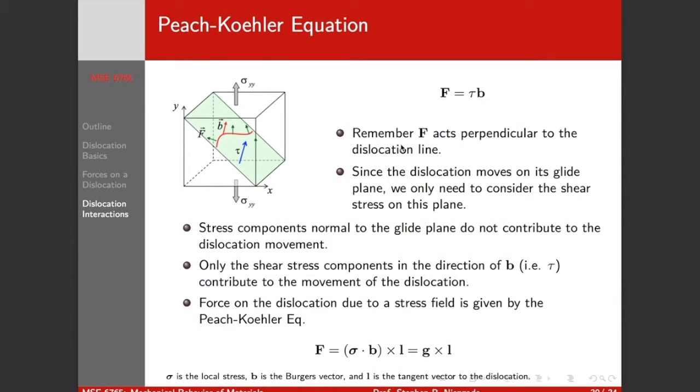Okay, last part, and I'm going to go through it pretty quickly. This has to do with the interactions between dislocations, or the forces acting on dislocations, the Peach-Koehler equation. So before we said f equals tau b, f acts perpendicular to the dislocation line.